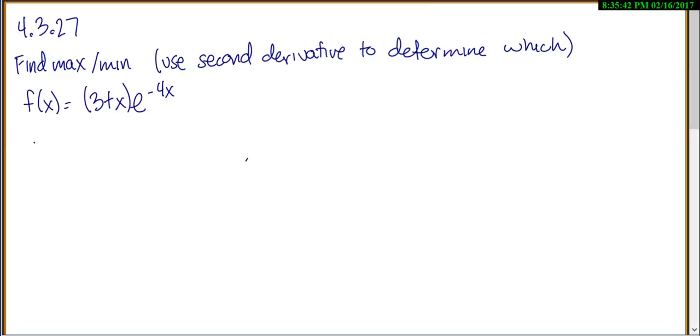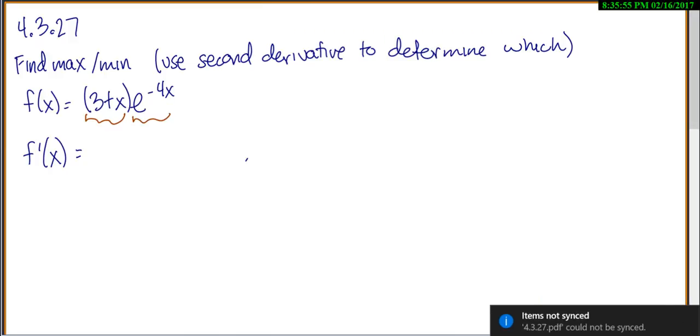So first to do this, I would want to find the derivative. Anytime you have to find a maximum, you have to find the derivative. Now the problem is when I look at this function, I have this 3 plus x times e to the negative 4x, and there's not any way I can simplify this. I have to use the product rule.